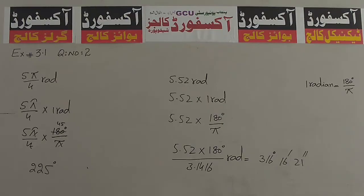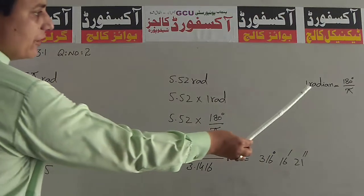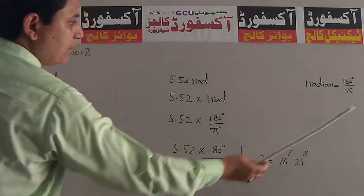Dear student, अब हम Question No.2 discuss करेंगे. Question No.2 की इबारत: Convert the following to degree. हमारे पास Radian में question दिया गया है और उसका कहना यह है कि इसको degree में तब्दील करें. पहला: 5π/4 Radian. Formula: 1 Radian is equal to 180 degree over Pi.